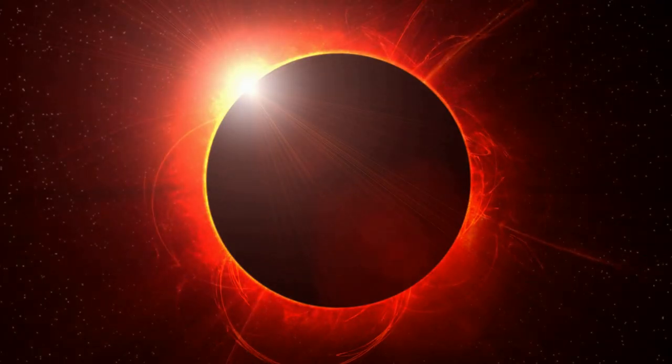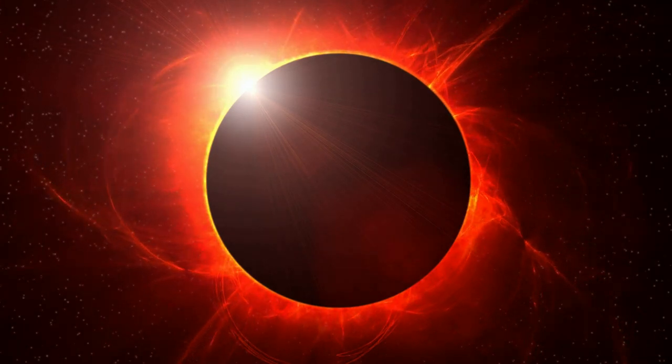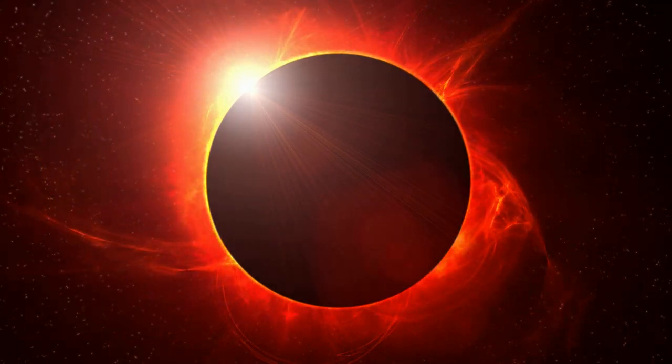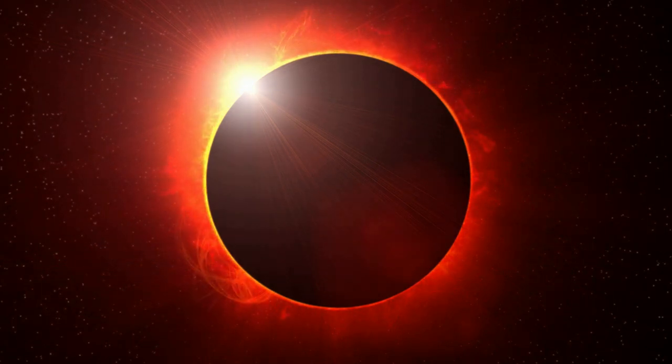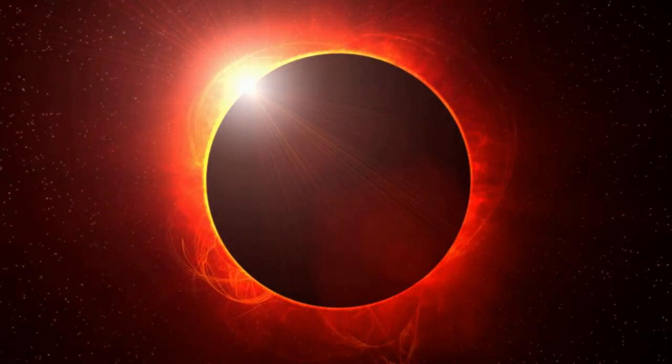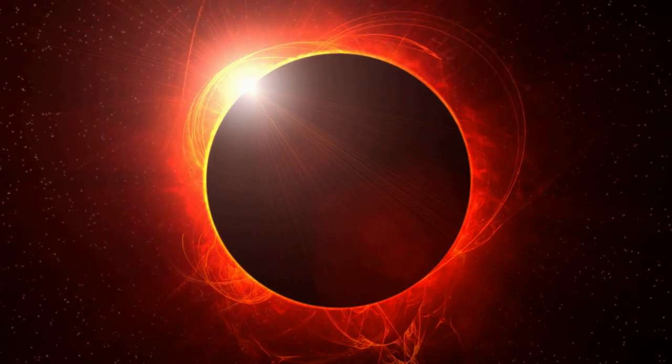To understand what happens, we need to delve into a bit of science. The sun is a massive heat source, radiating warmth to our planet. When the moon obscures the sun during a solar eclipse, it temporarily blocks this heat. This sudden drop in solar radiation cools the Earth's surface.